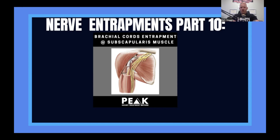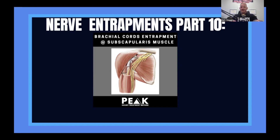Nerve entrapments part 10. If you haven't watched any of the other videos in this series, I will link them up top here on YouTube, or I will include it in the description box below. Brachial cords getting entrapped at the subscapularis muscle is a huge problem that is often very misdiagnosed and not found by a lot of providers. It links to a lot of problems in the shoulder itself, but also a lot of problems down the arm. So let's get right into it.